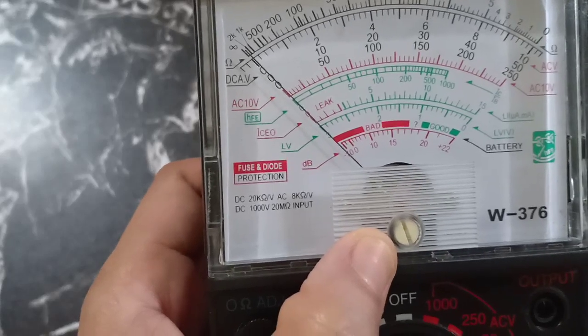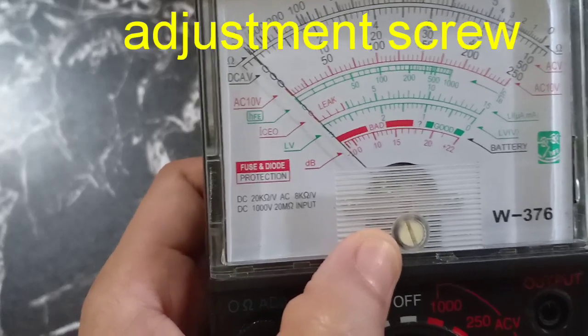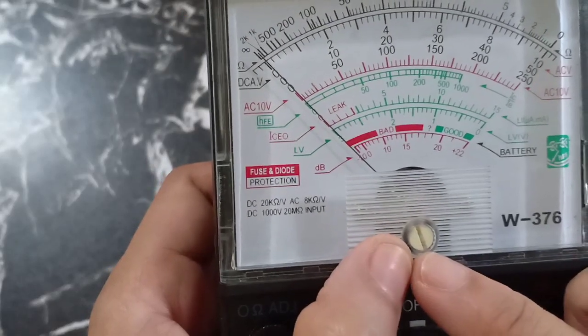This one here is called the adjustment screw. As you can see, it is like the head of a flat screw.